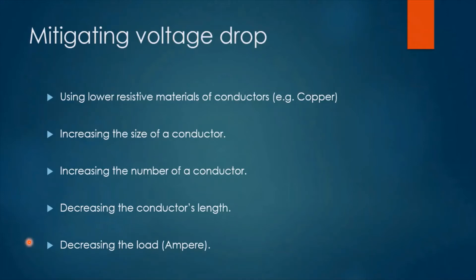Note that we sometimes cannot apply all these techniques to lower the voltage drop. We are not always able to shorten the length of a conductor, and we may not always be able to decrease the load carried. In most cases, we will use lower resistive material like copper and can increase the size and number of conductors instead. It all depends on the circumstances whether a particular method of decreasing voltage drop can be used.